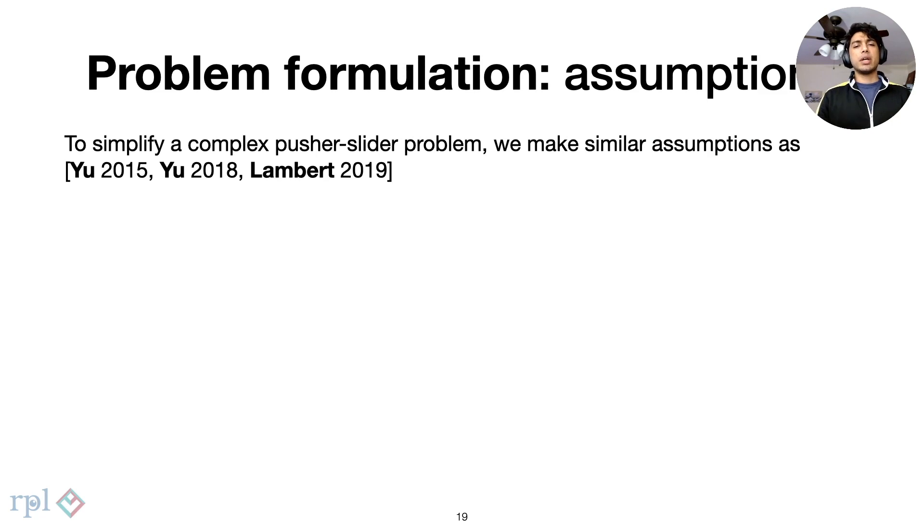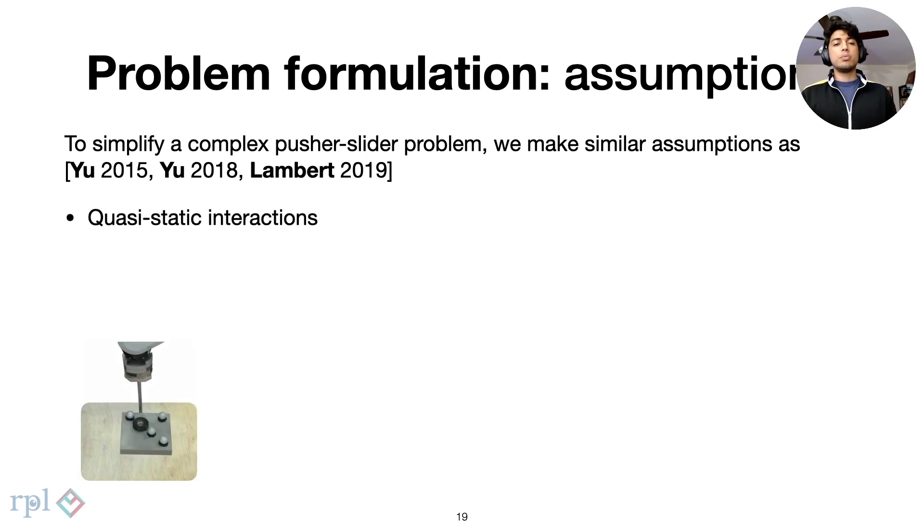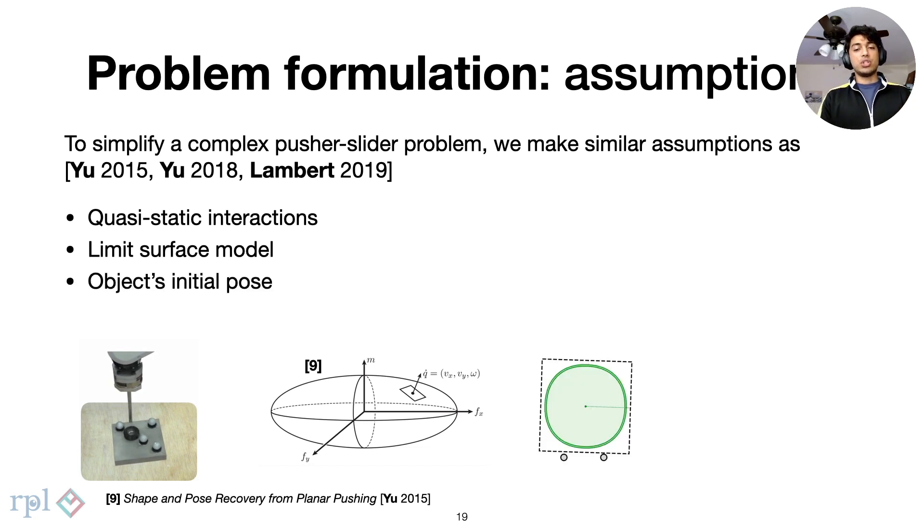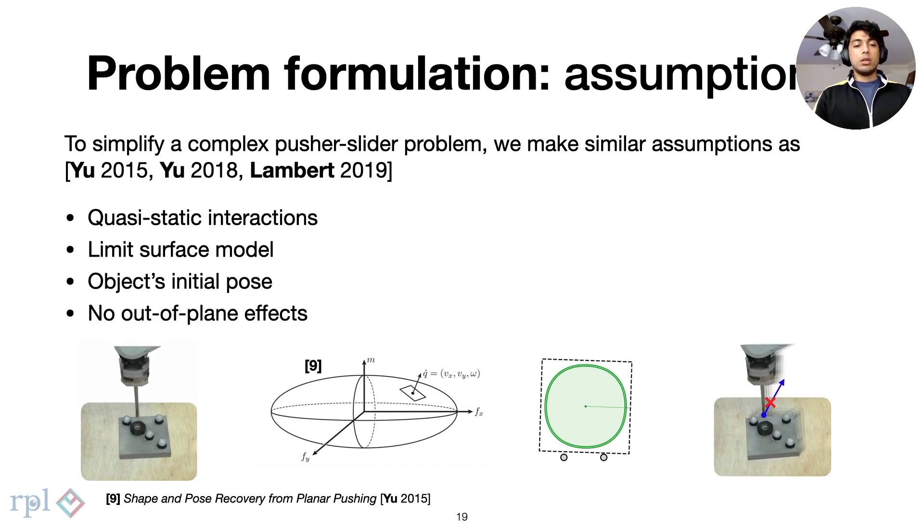We make some simplifying assumptions based on the success of prior methods in planar pushing. We assume that all interactions here are quasi-static. We consider the limit surface model, which are the equations that relate contact interactions with frictional forces and moments. We assume that we know the initial pose of the object that we are working with. And we consider all interactions to be planar.